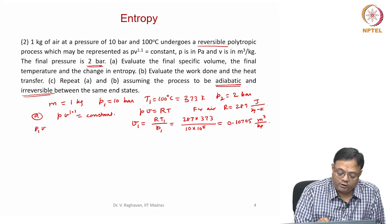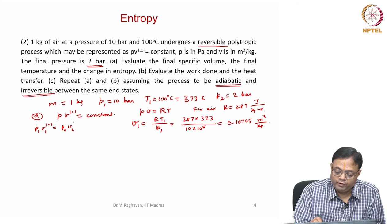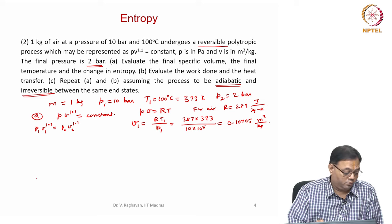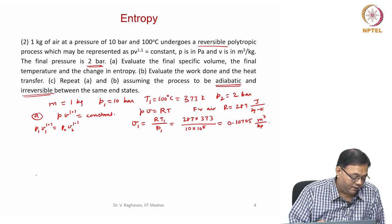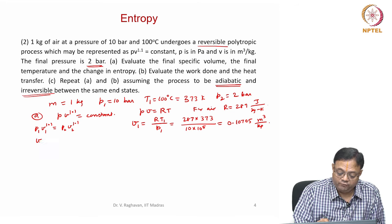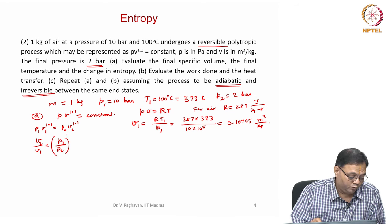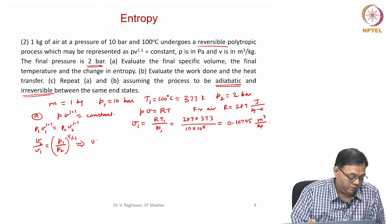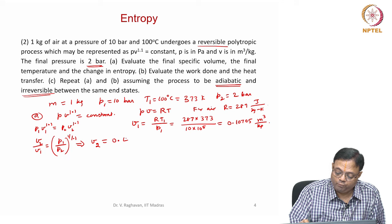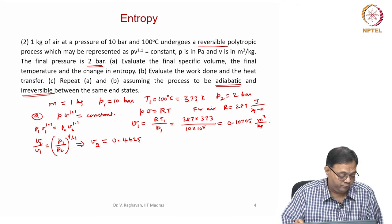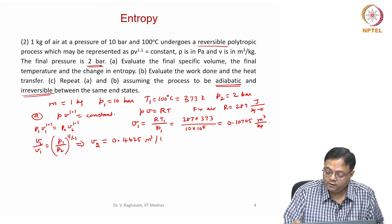Applying P1·V1^1.1 = P2·V2^1.1, we get V2/V1 = (P1/P2)^(1/1.1), which gives V2 = 0.4625 cubic meters per kg. The initial and final states are now fixed.